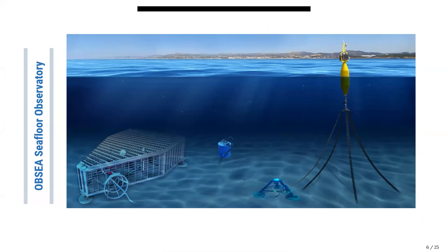Here is the arm of the observatory. We have the seafloor node where we deploy the majority of sensors; some sensors are moved independently but connected to the seafloor node. We also have a surface buoy where we deploy some meteorological sensors.